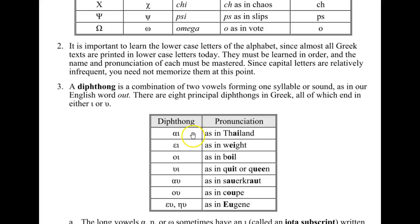There are eight principal diphthongs in Greek, all ending in iota or upsilon. Alpha-iota is pronounced I as in Thailand. Epsilon-iota pronounced A as in weight. Omicron-iota pronounced OI as in boil. Upsilon-iota is pronounced WE as in quit or queen. Alpha-upsilon is pronounced AU as in sauerkraut. Omicron-upsilon is pronounced OO as in coop. And epsilon-upsilon or eta-upsilon are pronounced U as in Eugene.